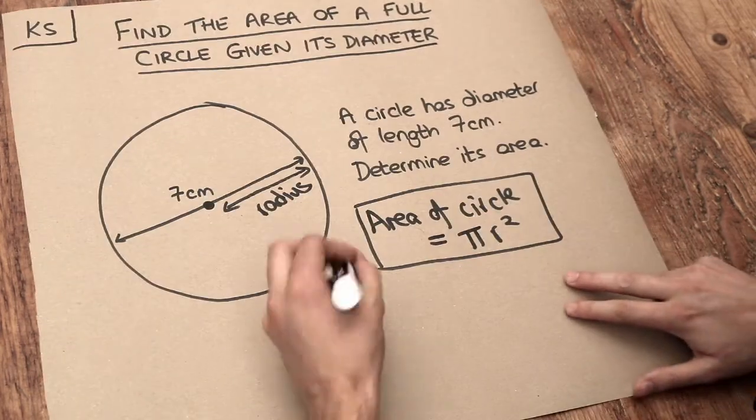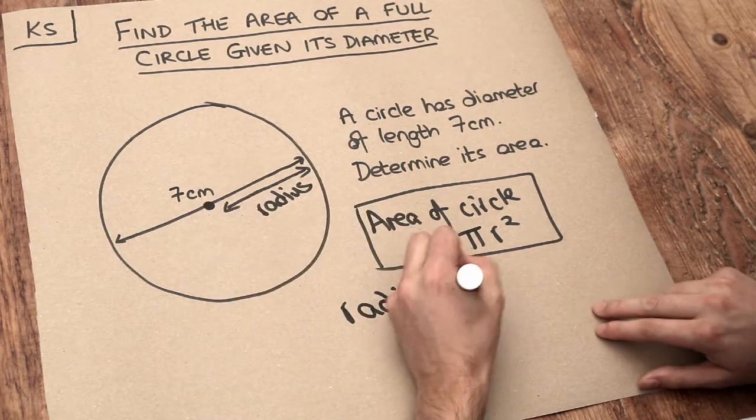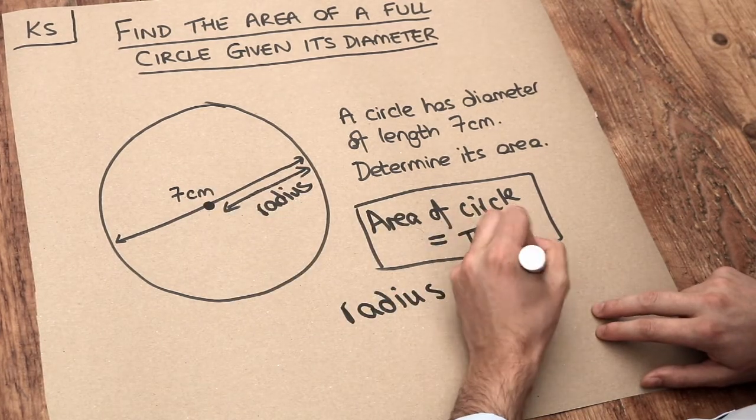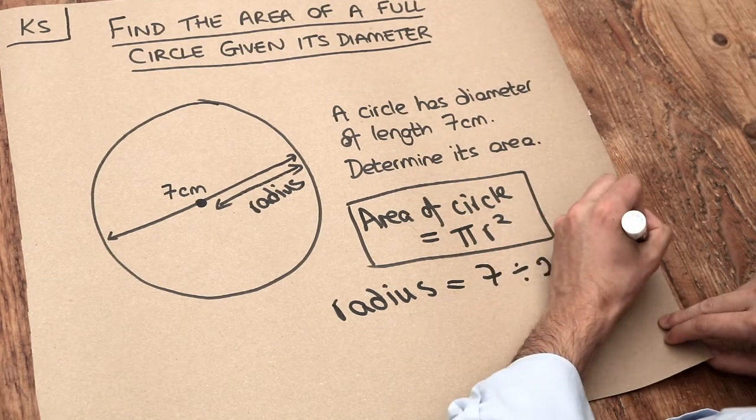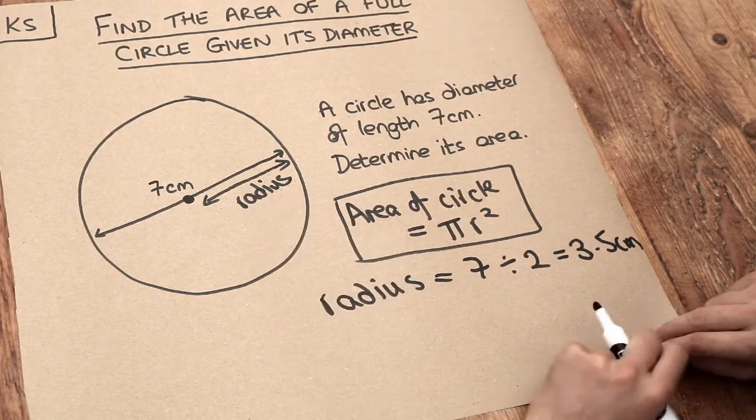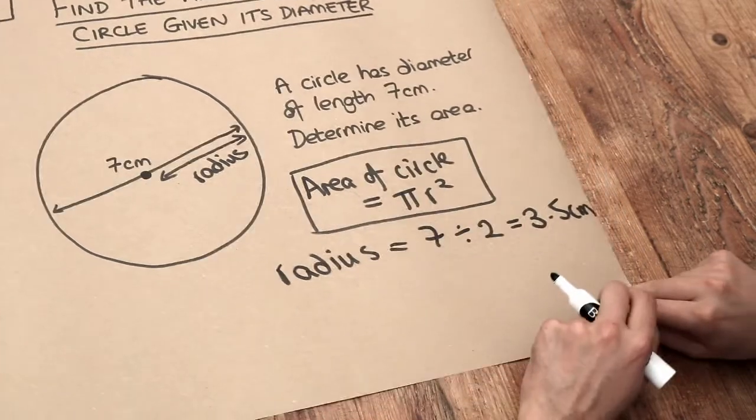So therefore to get to the radius of the circle we need to take our 7 centimetres and divide it by 2 and that gives us 3.5 centimetres. So the radius of the circle is 3.5 centimetres. And then we can use this formula here for the area of a circle.